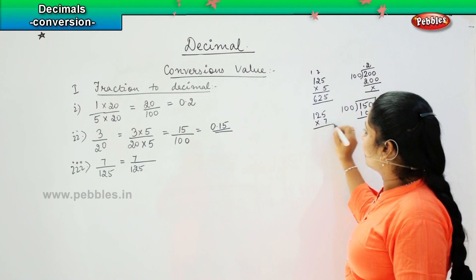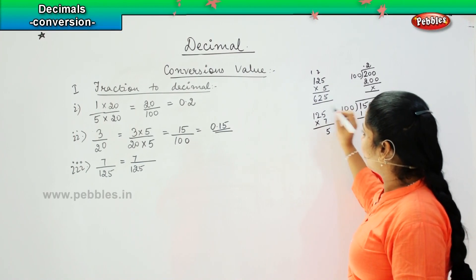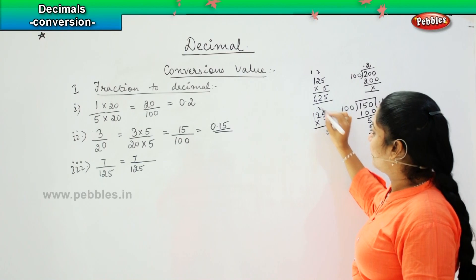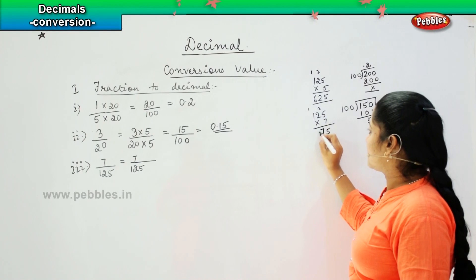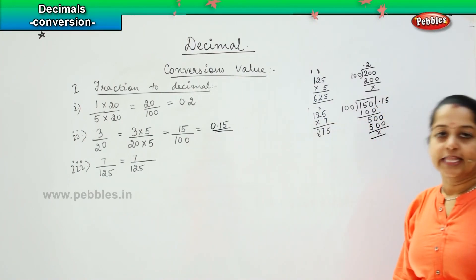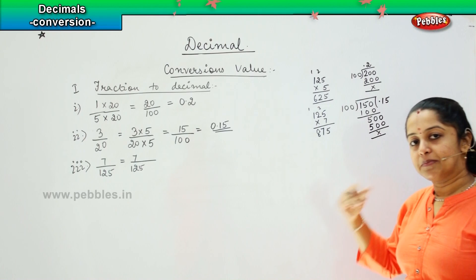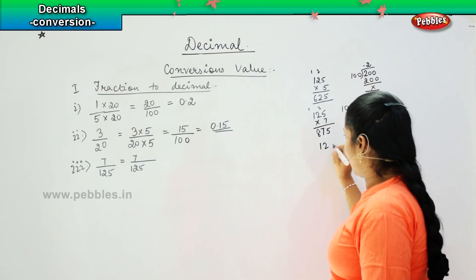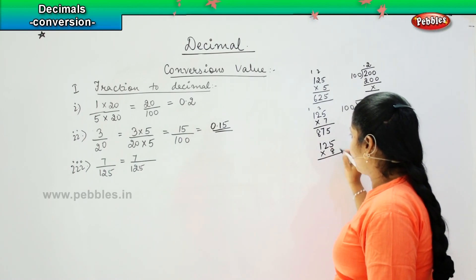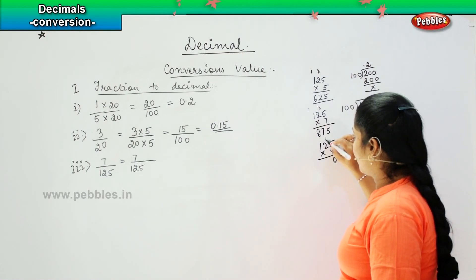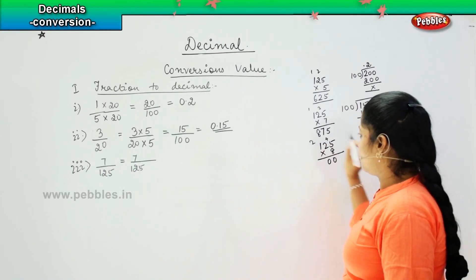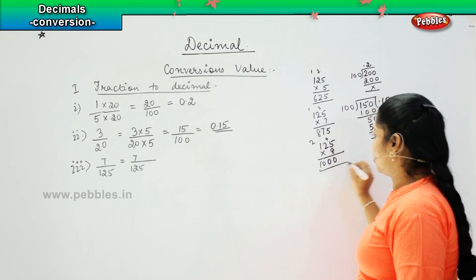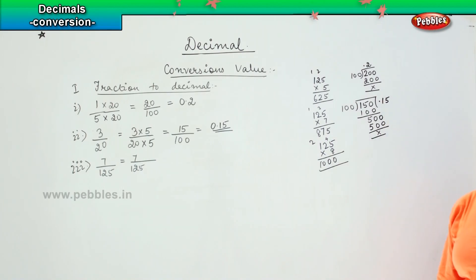125 into 7: 5 × 7 are 35, carry 3. 2 × 7 are 14, 14 plus 3 is 17, carry 1. 1 × 7 are 7, 7 plus 1, 8, so 875. Again, there is a chance, right? So we will be multiplying it by next number and seeing. So 125 into 8: 5 × 8 are 40, carry 4. 2 × 8 are 16, 16 plus 4 is 20, carry 2. 1 × 8 are 8, 8 plus 2, 10. So it is getting exactly multiplied by 8 to form 1000.